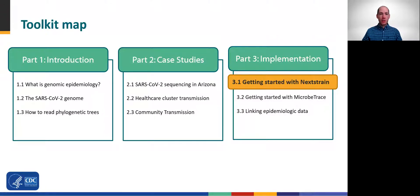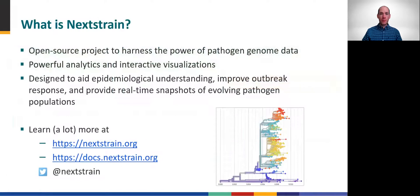Be sure to check out the Toolkit's other modules, particularly the case studies, which highlight ways that some state public health departments and laboratories have successfully used Nextstrain. In Module 1.3, we covered the basics of building and interpreting phylogenetic trees.